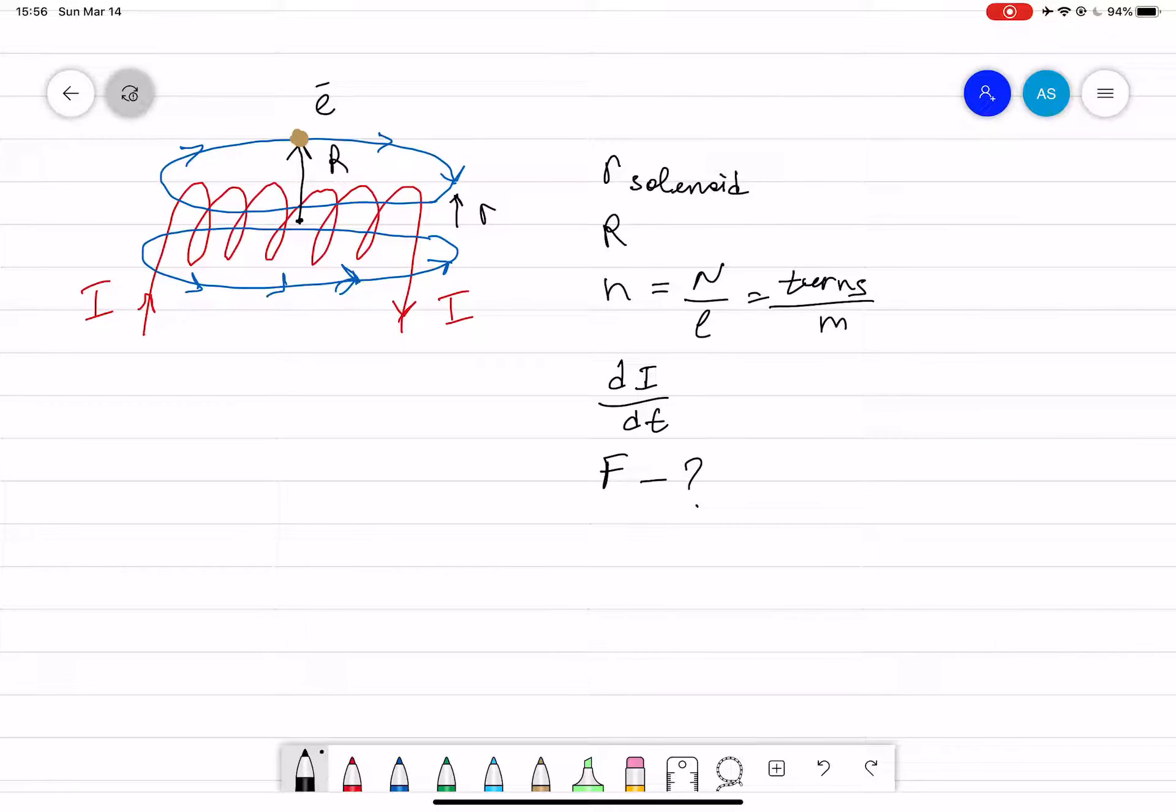A very long solenoid of circular cross-section with radius a (small radius of solenoid) is given. It has number of turns n per unit length of the wire. An electron is sitting outside of the solenoid on the top at a distance of capital R from the solenoid axis, which is at the center. What is the magnitude of the force on the electron while